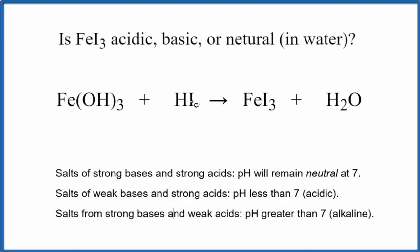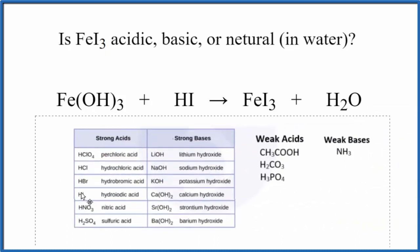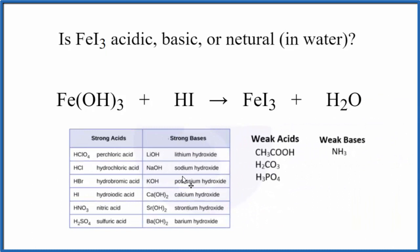Now we know the neutralization reaction, we need the strength of each of these substances. Here, iron(III) hydroxide, we look at this table here. We don't see for the bases, we don't see iron(III) hydroxide, so this is going to be a weak base. It's not on our strong base list.